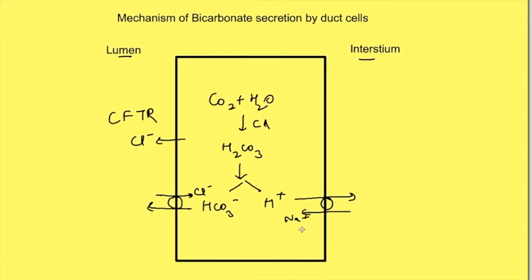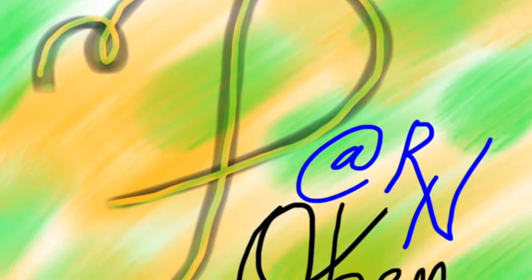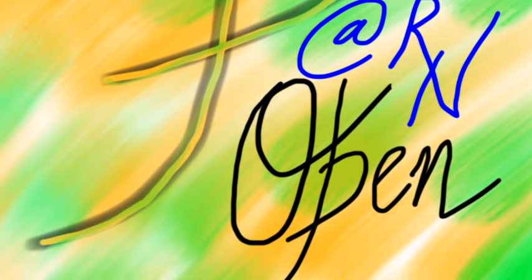The sodium ions which have entered into the cell by sodium hydrogen exchanger are thrown out by sodium potassium ATPase. This is how bicarbonate enters into the lumen of the duct and then water follows passively from the paracellular route.